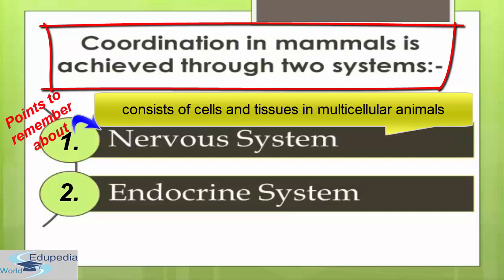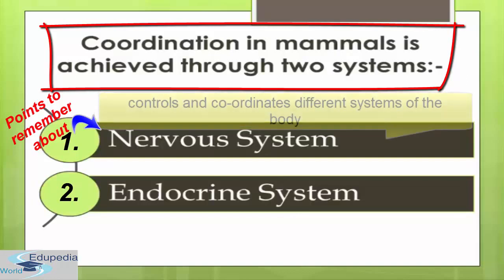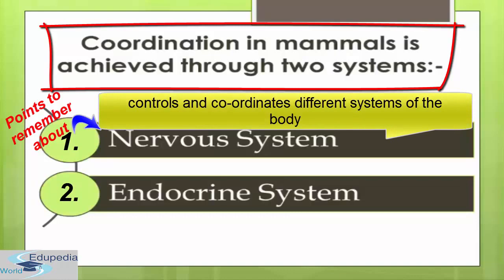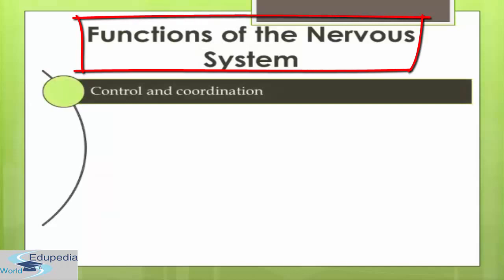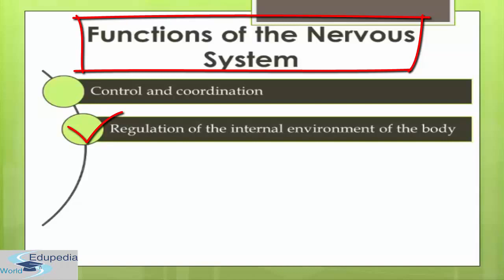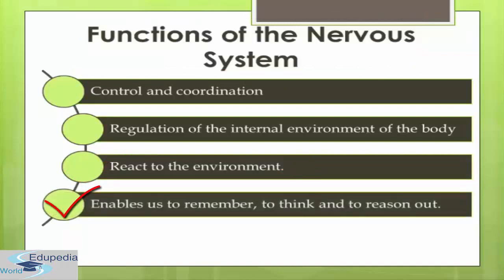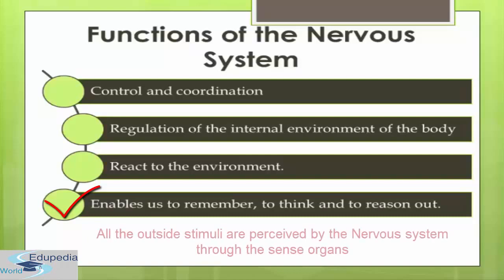Nervous system consists of cells and tissues in multicellular animals. It conveys information between sensory cells and organs, and controls and coordinates the different systems of the body. The functions of nervous system are: to control and coordinate various body activities both voluntary and involuntary; to regulate the internal environment of the body; to react to the environment through the sense organs; and to enable us to remember, think, and reason out. All outside stimuli are perceived by the nervous system through the sense organs.